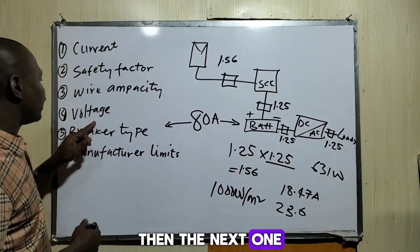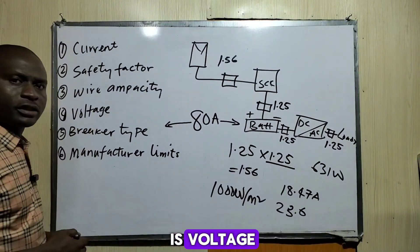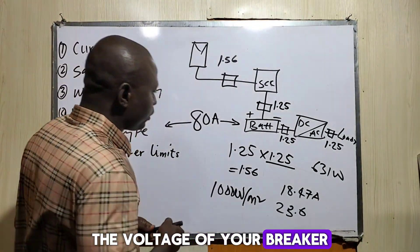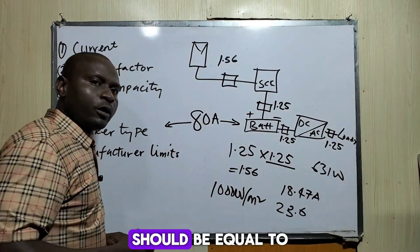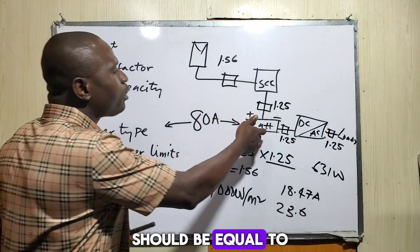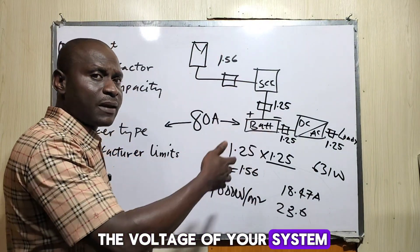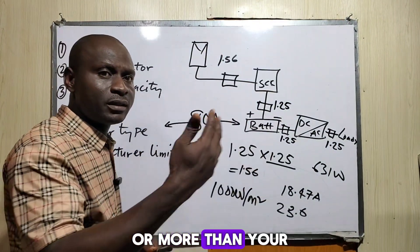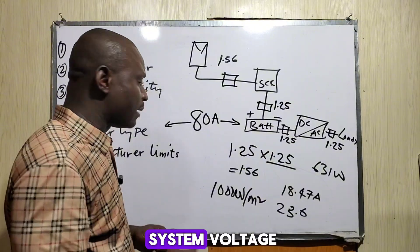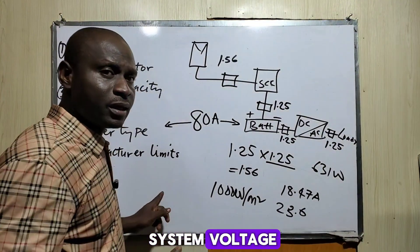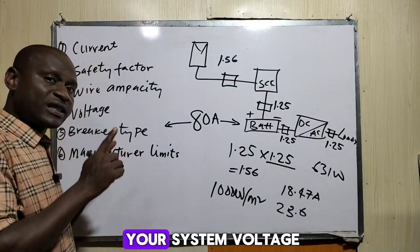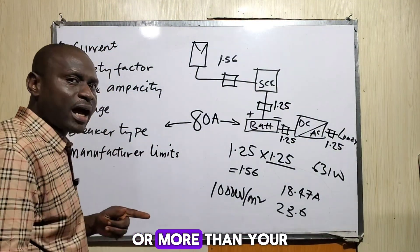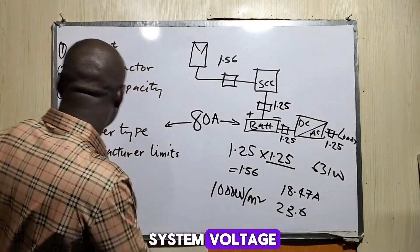The next factor is voltage. The voltage rating of your breaker should be equal to your system voltage or more than your system voltage.